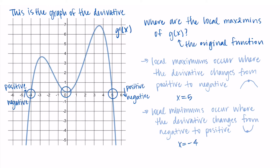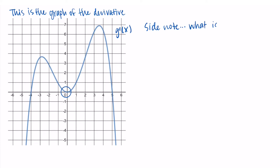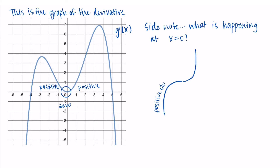We have one other place with a derivative output of 0 that we haven't discussed yet — x equals 0. Near x equals 0 on the graph of the derivative, the outputs are positive, then become 0 at x equals 0, and stay positive afterward. Because we have positive, then 0, then positive, this doesn't correspond to either a local max or min on the original function. You could imagine a positive slope, then leveling off to a 0 slope in the middle, then a positive slope again — so x equals 0 is not a local max or min; the function is just going positive, leveling off, then increasing again.